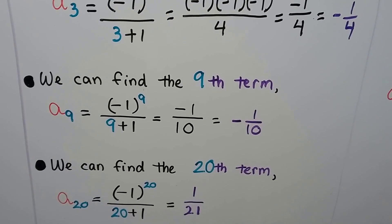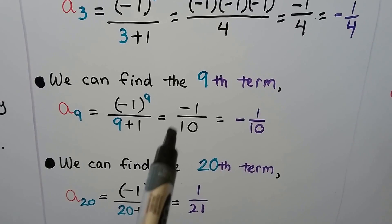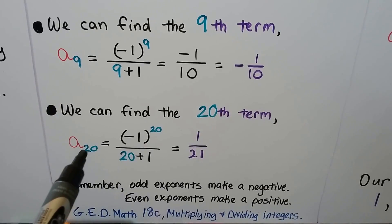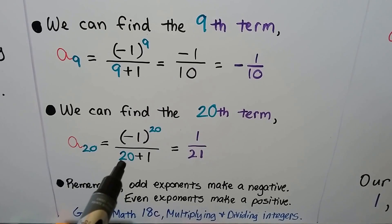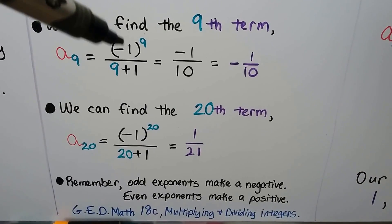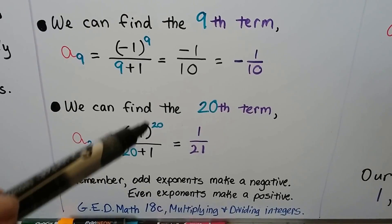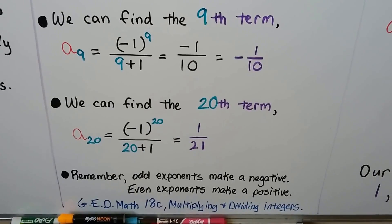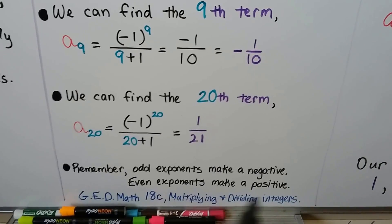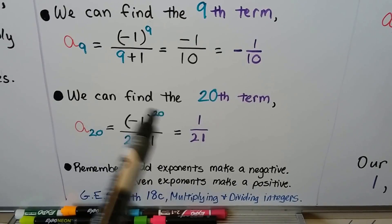We can find the 9th term. All we have to do is put a 9 here for the subscript and a 9 for the exponent and a 9 in the denominator. That's going to give us a negative 1 over a 10 or a negative 1 tenth. And we can find the 20th term if we wanted to. We just have a 20 for our subscript, so it's going to be our exponent and also down here in our denominator. We're going to have 1 over 21. So, remember, when we're multiplying this negative 1 by an odd exponent up here, it's going to be a negative. And when it's an even exponent, it's going to be a positive. See that? If you're confused about this, there'll be a link in the description to the GED Math video 18c that talks about multiplying and dividing integers and how you can use even and odd exponents to know if it's going to be a negative or a positive.